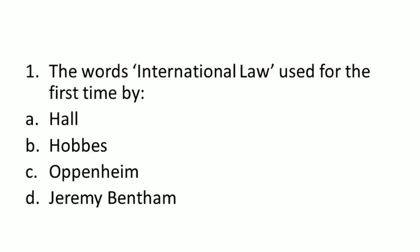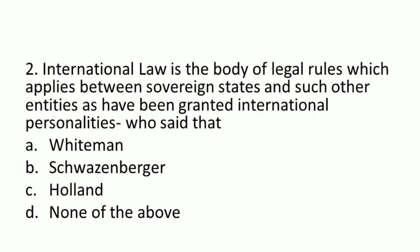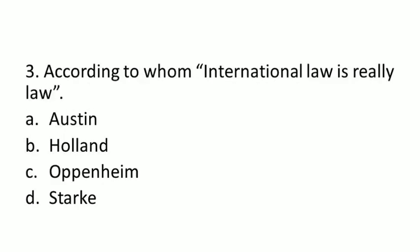Our next question: 'International law is the body of legal rules which applies between the sovereign states and such other entities as have been granted international personalities.' Who said that? The definition of international law is given and we have to identify the scholar. Our options are: A) Whiteman, B) Schwarzenberger, C) Holland, D) None of the above. The answer is B — Schwarzenberger. He gave this definition of international law.